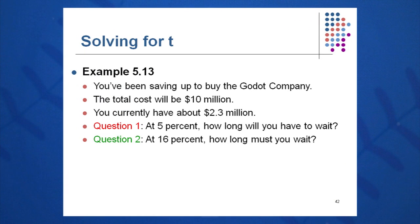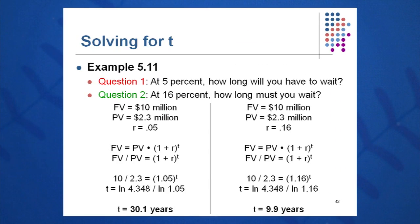You've been saving up to buy the Godot company. Total cost will be $10,000,000. You currently have $2.3 million. At 5%, how long will you have to wait? At 16%, how long will you have to wait? So in this case, we're solving for the T variable, the time.